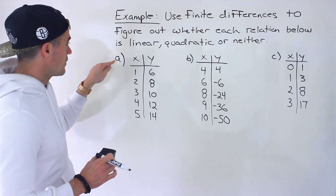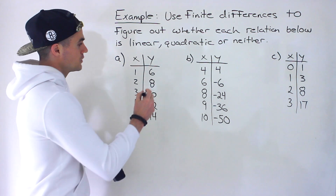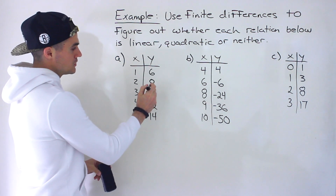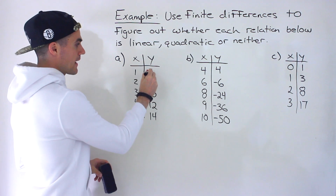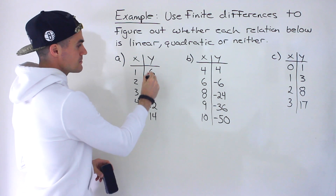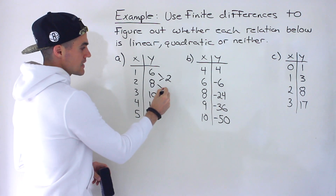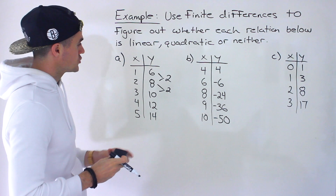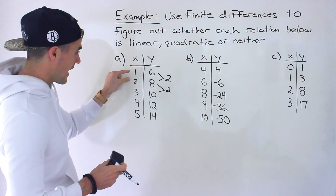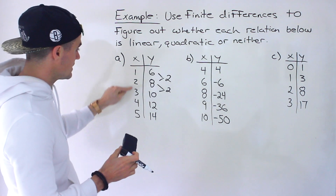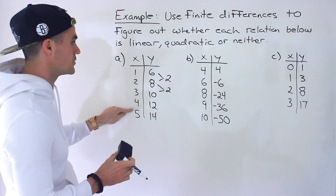Let's start with part A, the first table. When taking the differences between y values, you want to take the bottom y value and subtract the top y value. So you do 8 minus 6, which gives positive 2, then 10 minus 8, which gives positive 2. Also, make sure the x values have the same differences between them — here they are 1, 2, 3, 4, 5, all with a difference of 1.